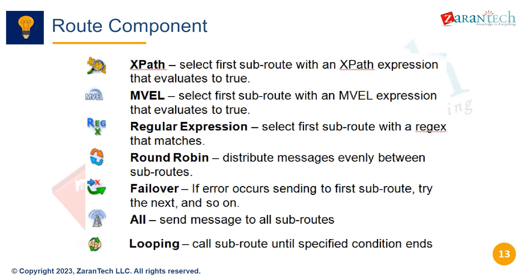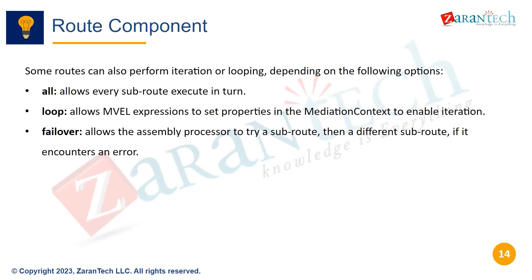Some routes can also perform iteration or looping, depending on the following options. ALL allows every sub-route to execute in turn. Loop allows MVEL expressions to set properties in the mediation context to enable iteration. Failover allows the assembly processor to try a sub-route, then a different sub-route if it encounters an error.